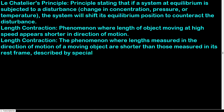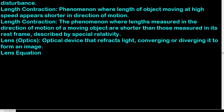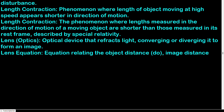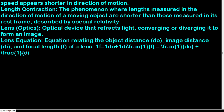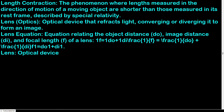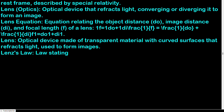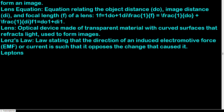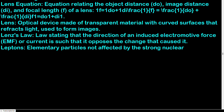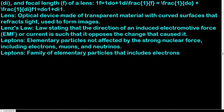Length contraction: phenomenon where the length of an object moving at high speed appears shorter in the direction of motion, as described by special relativity. Lens equation: 1/f = 1/do + 1/di, relating object distance, image distance, and focal length of a lens. Lenz's law: the direction of an induced EMF or current opposes the change that caused it. Leptons: elementary particles not affected by the strong nuclear force, including electrons, muons, tau particles, and their associated neutrinos.